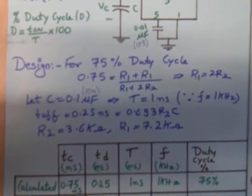Design steps. For 75% duty cycle, the required formula is given as follows.